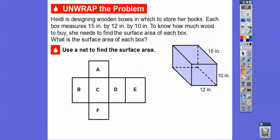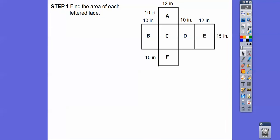If we flatten that out, it would look something like that — remember doing nets in the last lesson? If you can cut it all out and flatten that down and flatten all three of these sides down like that, it would look something like that. So let's put the lengths on there — there are all the lengths right there.